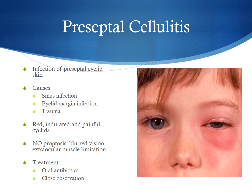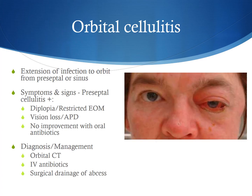Treatment for preseptal cellulitis includes oral antibiotics and very close observation. Close observation is required to monitor for the development of orbital cellulitis, which is an extension of the infection to the orbit from the preseptal area or directly from the sinuses. Symptoms and signs of orbital cellulitis include those of preseptal cellulitis plus diplopia or double vision associated with restricted extraocular muscle movement within the orbit, as well as vision loss and an afferent pupillary defect suggesting compression of the optic nerve.